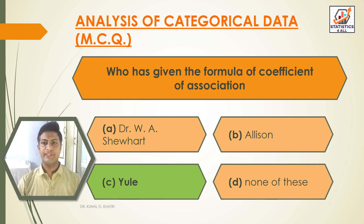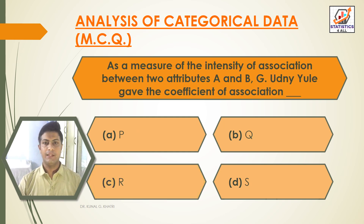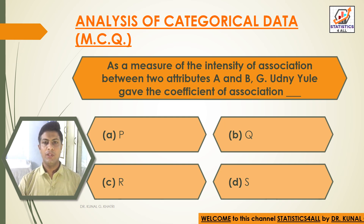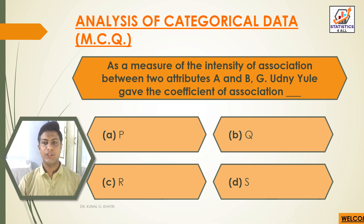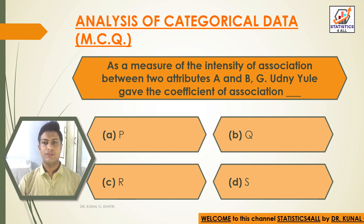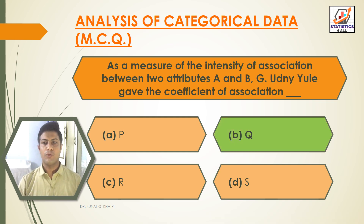Next question: as a measure of the intensity of association between two attributes A and B, G. Udny Yule gave the coefficient of association — option A: P, option B: Q, option C: R, option D: S. The answer is option B, that is Q.